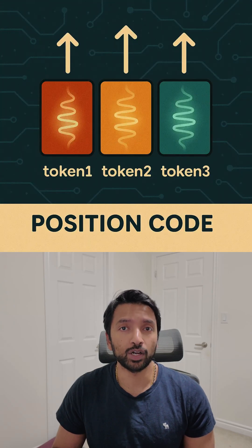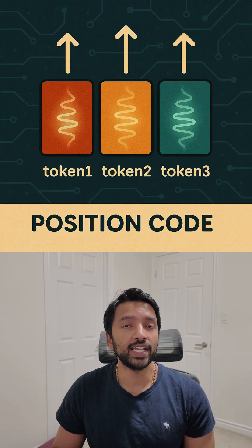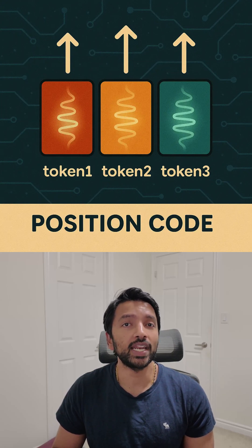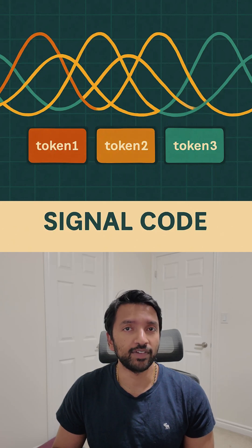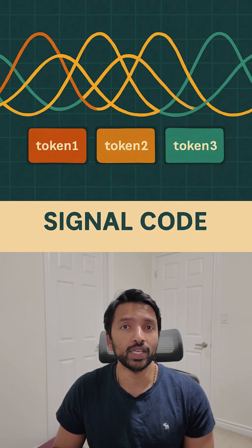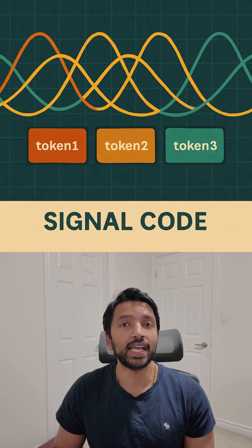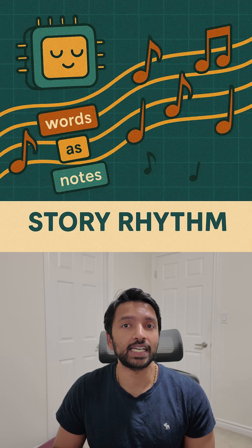Transformers are order-agnostic — they process input in parallel. So they inject positional encodings: special vectors added to each token's embeddings that represent where it sits in the sequence. The original method uses sine and cosine waves at varying frequencies to give each position a unique signature, letting the model learn context with position — like understanding timeliness, structure, and grammar flow.